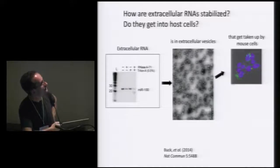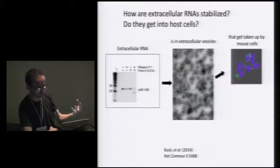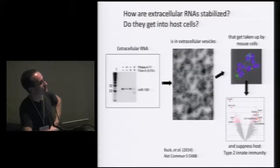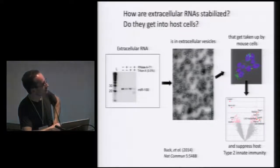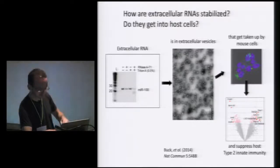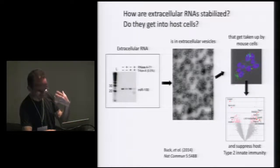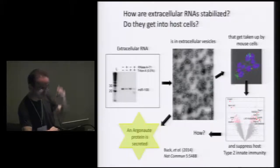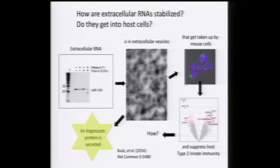By using a dye added to these vesicles and then putting the vesicles on top of mouse cell lines, Amy was able to show that the content of the vesicles is actually getting into the cells to some extent. Expression arrays of the cell lines cultivated with or without these vesicles show that a lot of the gene expression changes involve the type 2 innate immune response. It is well known immunologically that the secretion product represses the type 2 innate immune response, so how could the RNAs actually be participating in this process?